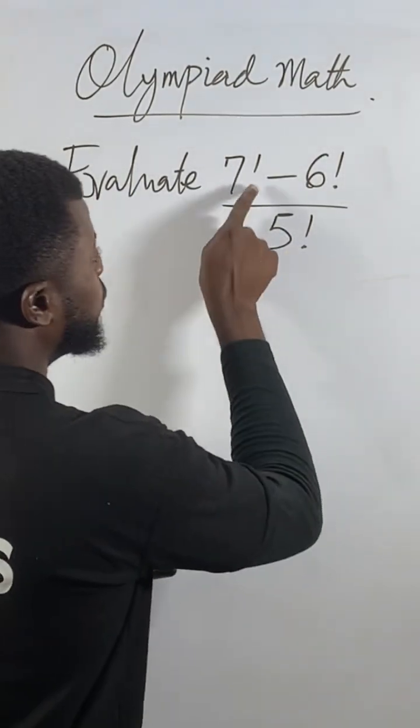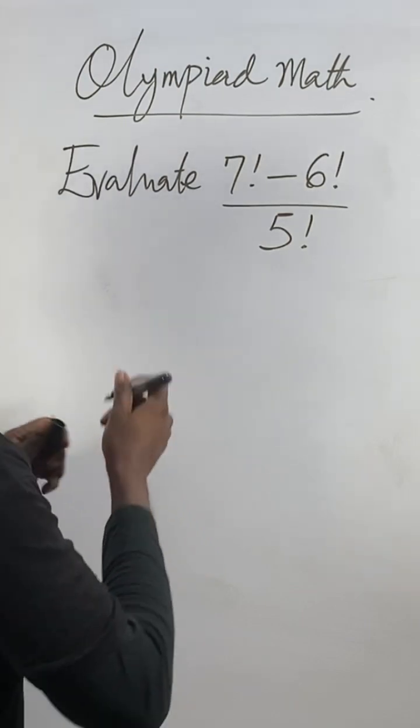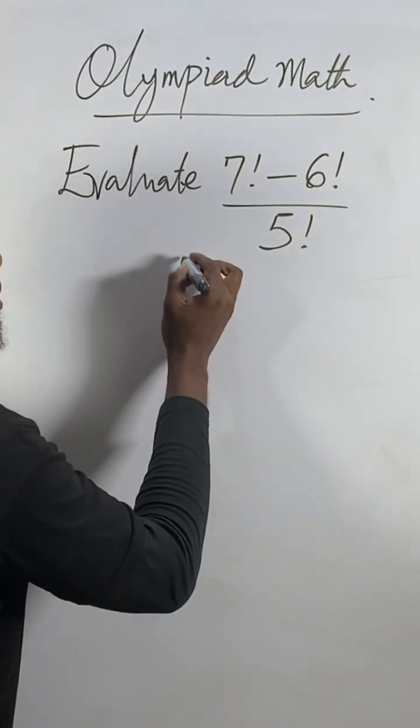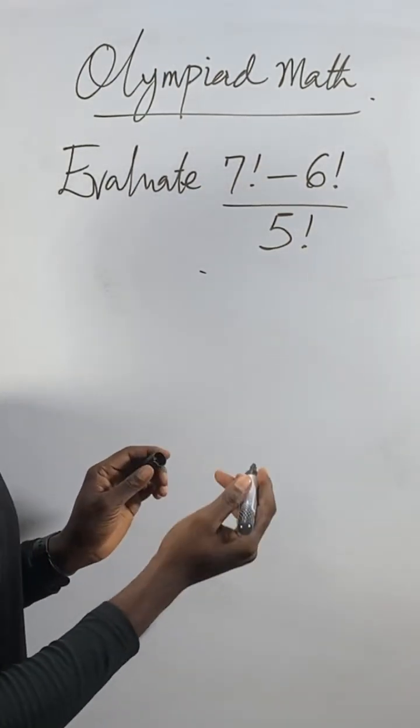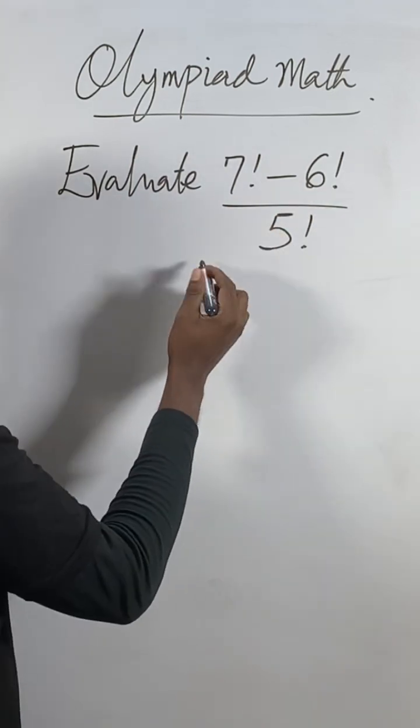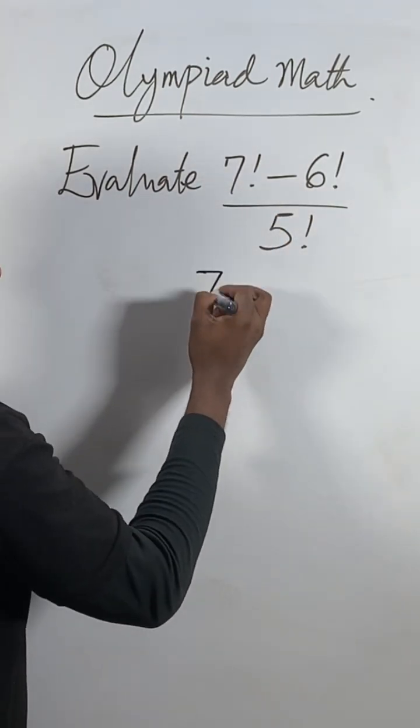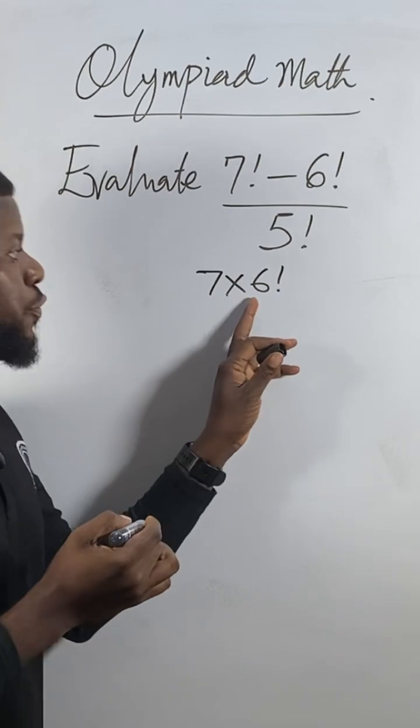I want to show you a shortcut. If you see 7 factorial and expand it as 7 times 6 times 5, it will take too long. But since I see 6 factorial in the problem, I'll use the fact that 7 factorial equals 7 times 6 factorial.